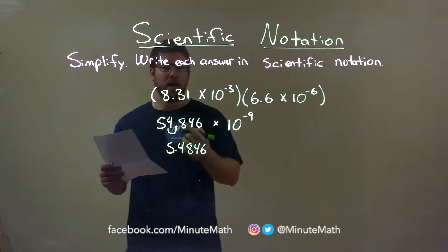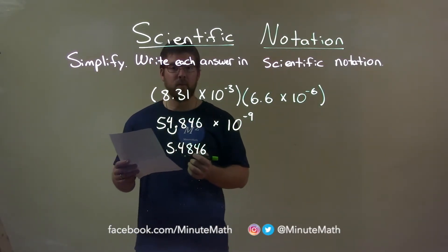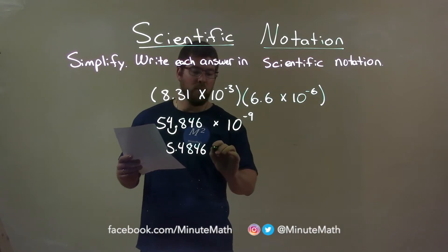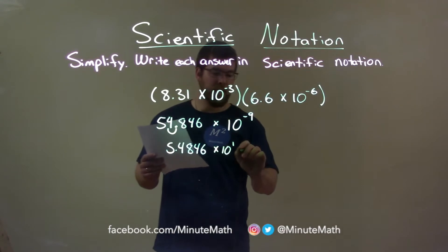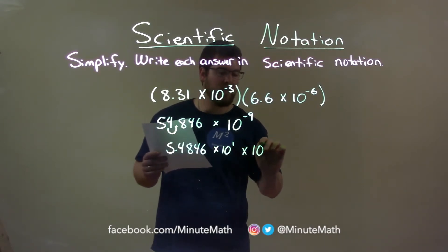We still need to counteract that decimal that moved over to the left one spot. So to do that, we multiply this by 10 to the first power, positive 1. Bring down the 10 to the negative ninth power.